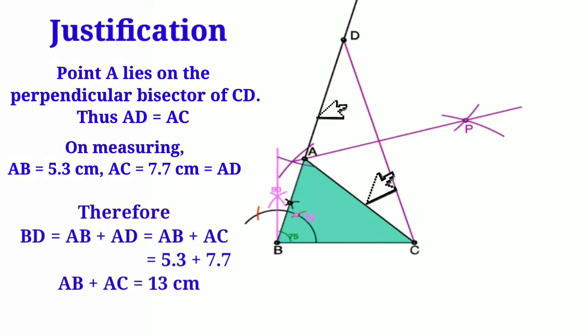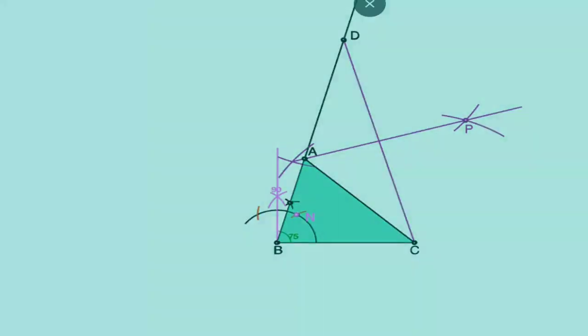Now measure AB and AC. You will find out that this sum is equal to 13 cm. At times we get an error of 0.1 or 0.2 cm here and there. If it's like that, it's fine, but eventually we should get the sum of the sides as 13 cm or whatever is given in the question.